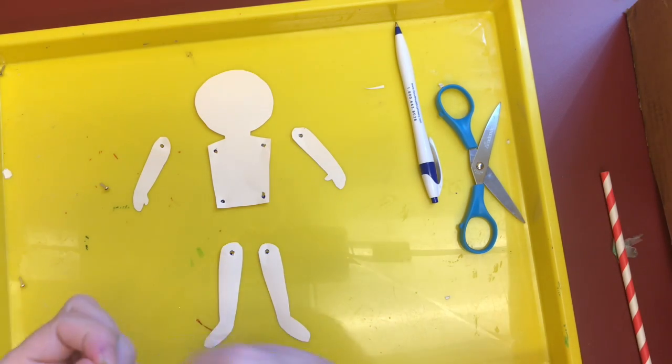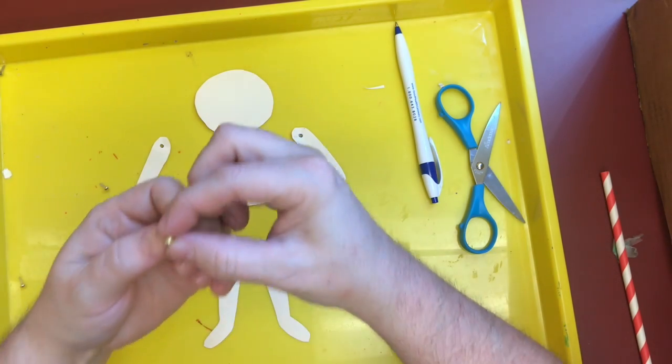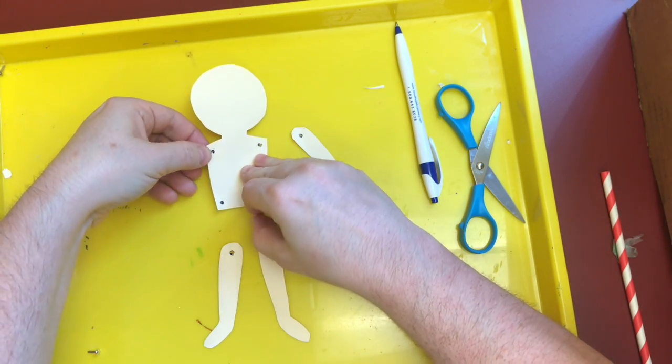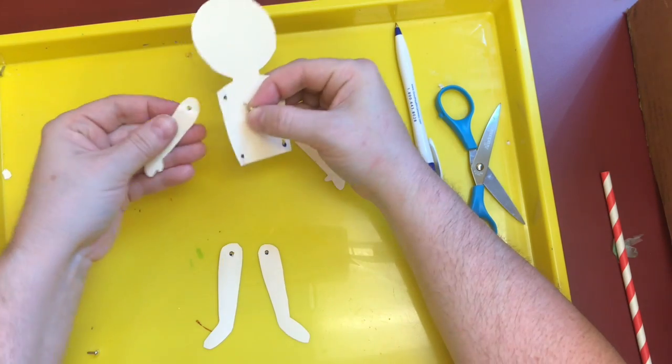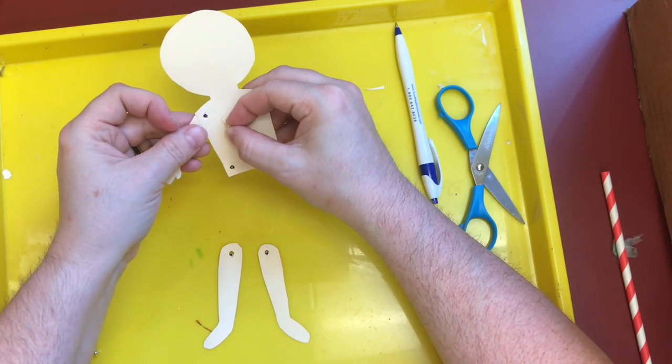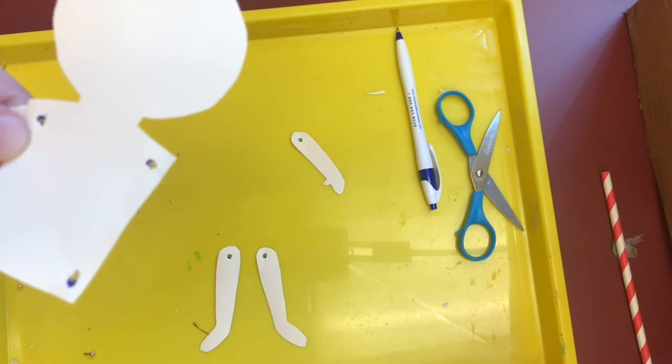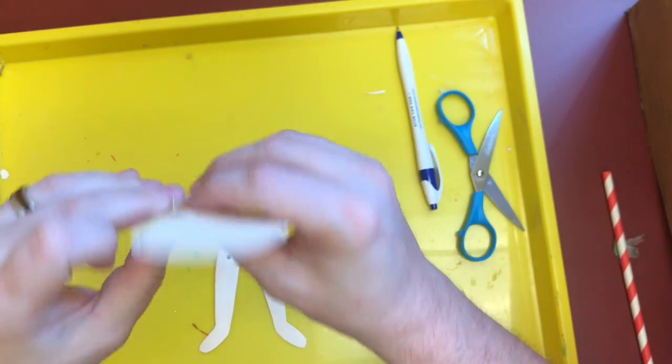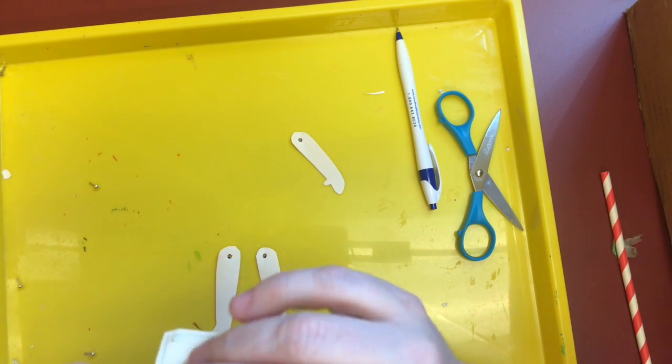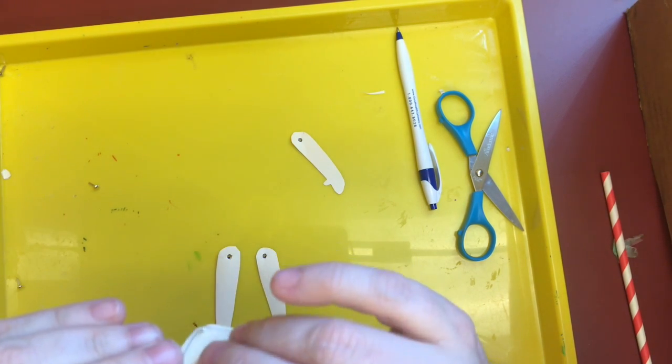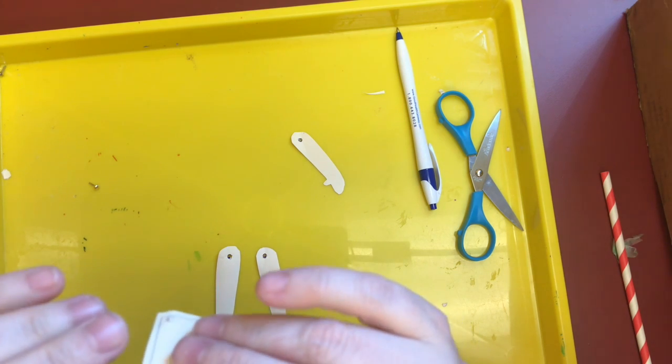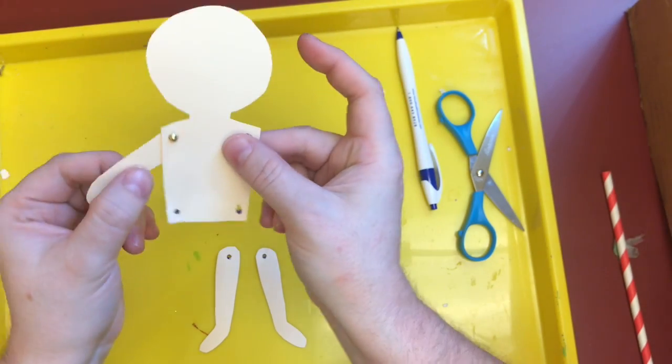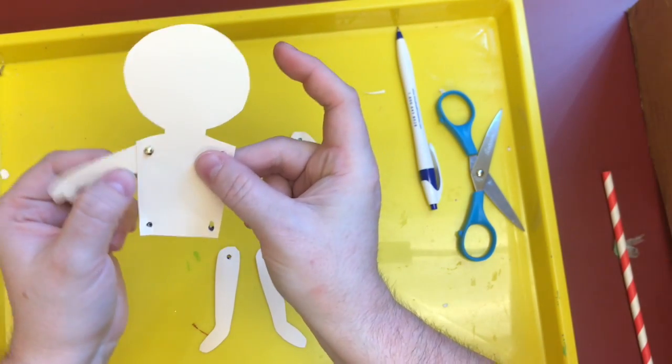We need to put them all together. So you take your paper fastener, you put your arm or your leg in the hole, or you put the two holes lined up. I don't know if you can see that. And you stick the paper fastener through and unfold the legs on the back. Now you don't want to push these super tight because you want your arms and legs to swing like this.